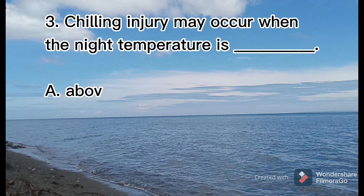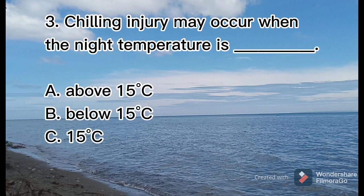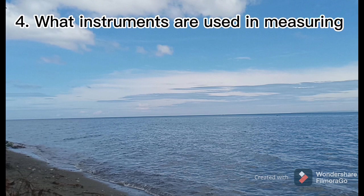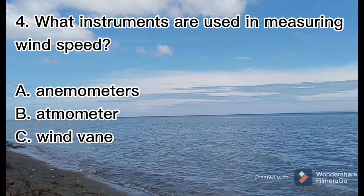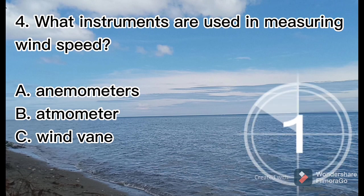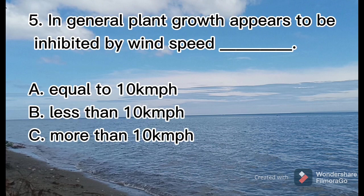Number three: chilling injury may occur when the night temperature is — A: above 15 degrees Celsius, B: below 15 degrees Celsius, or C: 15 degrees Celsius. Number four: what instruments are used in measuring wind speed? A: anemometers, B: atmometer, or C: wind vane. Number five: in general, plant growth appears to be inhibited by wind speed — A: equal to 10 km per hour, B: less than 10 km per hour, or C: more than 10 km per hour.